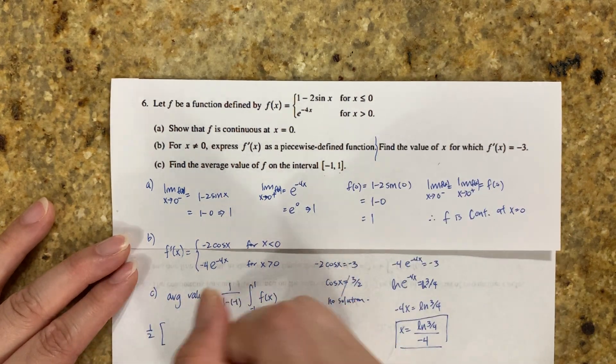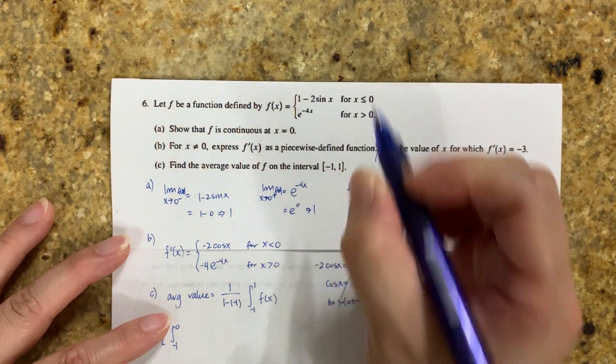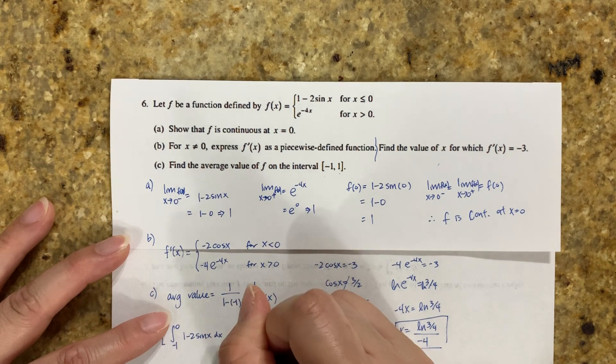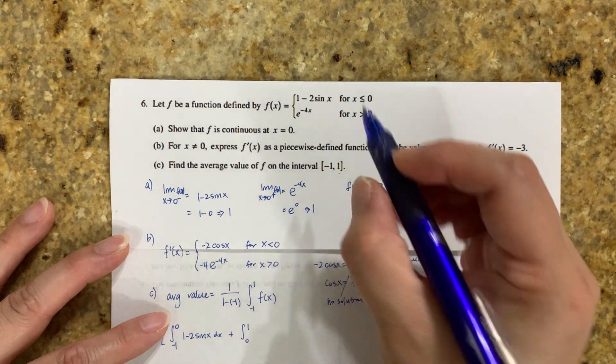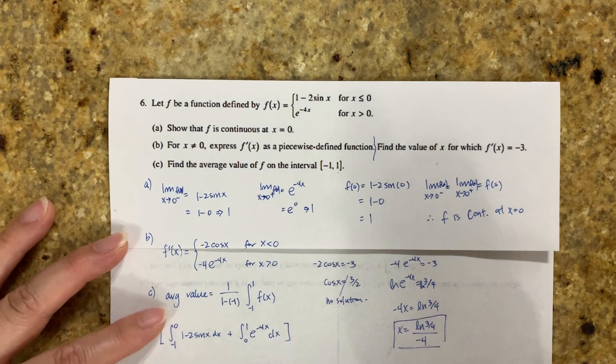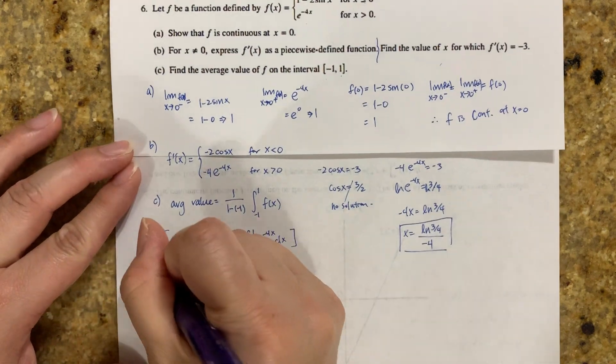So it's the integral from -1 to 0 of the left side, 1 - 2sin(x) dx, plus from 0 to 1 of the right side, e^(-4x) dx. That's how you tackle this. So you have 1/2 times that.